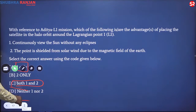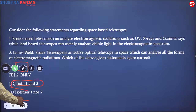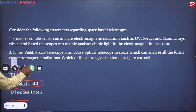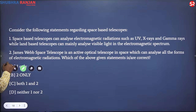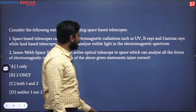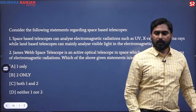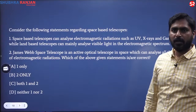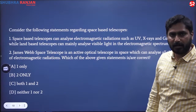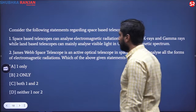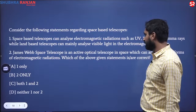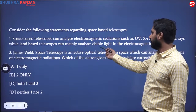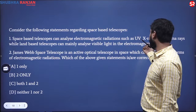Moving on to the next question, which involves James Webb. Consider the following statements regarding space-based telescopes. Two famous space-based telescopes are Hubble and the recent James Webb telescope. Space-based telescopes can analyze electromagnetic radiation such as UV, X-rays, and gamma rays, while land-based telescopes can mainly analyze visible light in the electromagnetic spectrum.